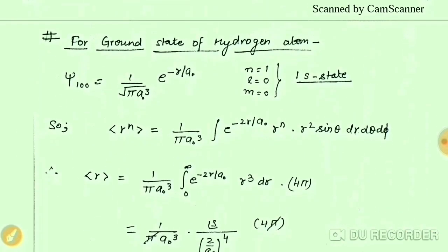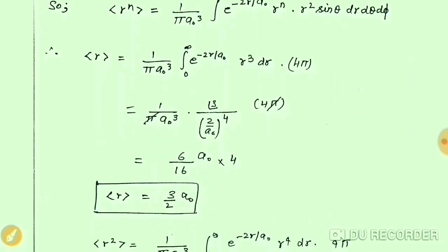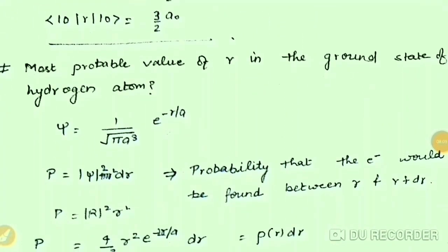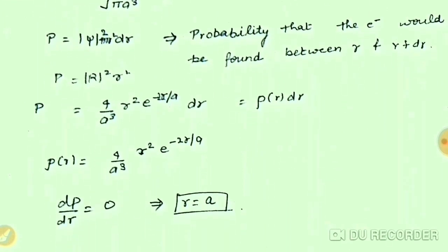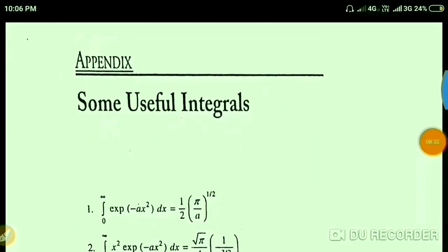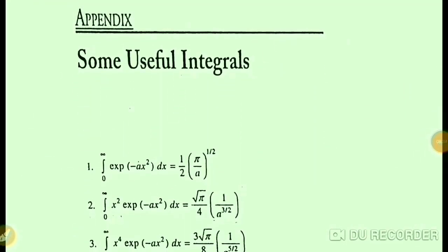Similarly, if you have to find the most probable value of r in the ground state, you find the probability |ψ|² dτ, then differentiate with respect to r and set it equal to zero. This gives r = a₀ as the most probable radius.